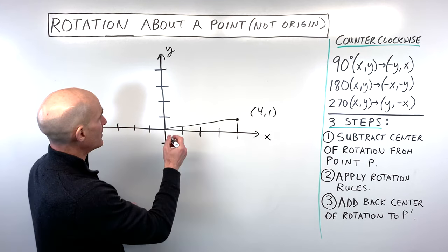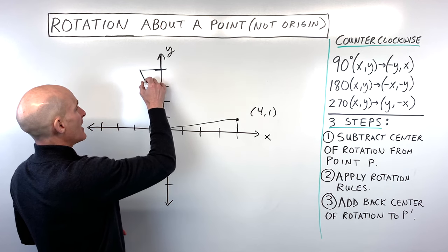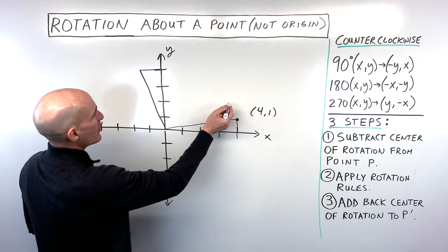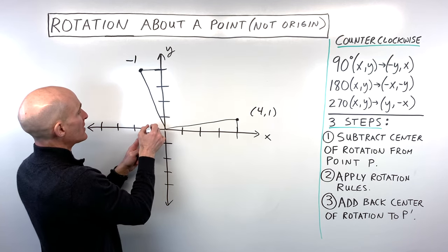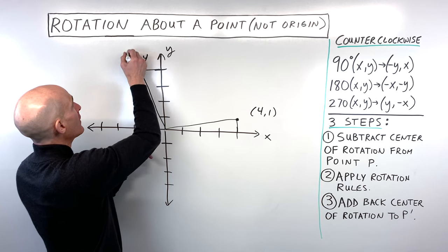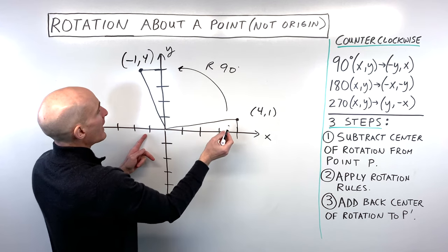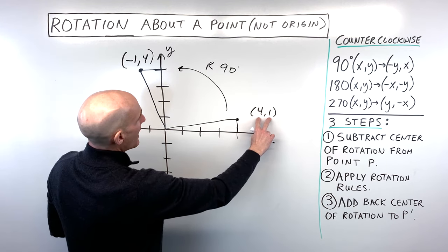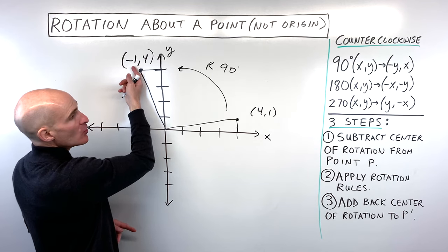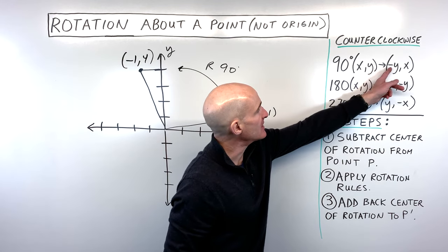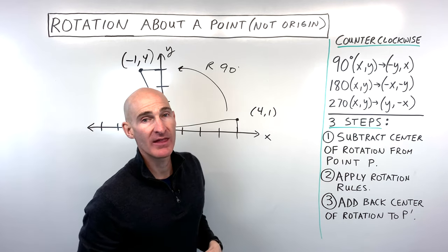After that quarter turn, this point ends up right here — at (-1, 4). Left 1, up 4. So when we rotate 90 degrees counterclockwise, the x and y coordinates switch, but the new x coordinate is the opposite sign. We switched x and y, and made the new x the opposite.